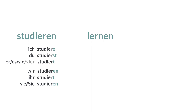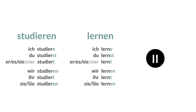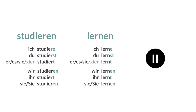Here it is for lernen: ich lerne, du lernst, er, es, sie, xie lernt, wir lernen, ihr lernt, sie lernen. Pause this video now and read the conjugations many times until you know them more or less by heart.